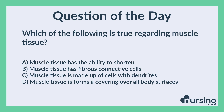Again, which of the following is true regarding muscle tissue? A. Muscle tissue has the ability to shorten. B. Muscle tissue has fibrous connective cells. C. Muscle tissue is made up of cells with dendrites. D. Muscle tissue forms a covering over all body surfaces.